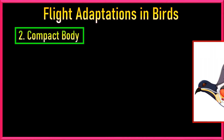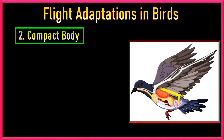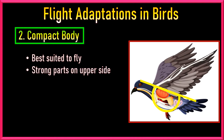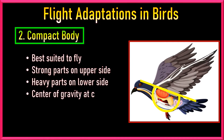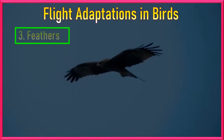Number 2: Compact Body. Birds have adopted a compact body best suited to fly. All the strong parts like wings are on the upper side of the body, while all heavier parts like body systems are on the ventral side. This compactness has efficiently positioned the center of gravity to the center of the body, which helps in movement of wings to lift the body easily.